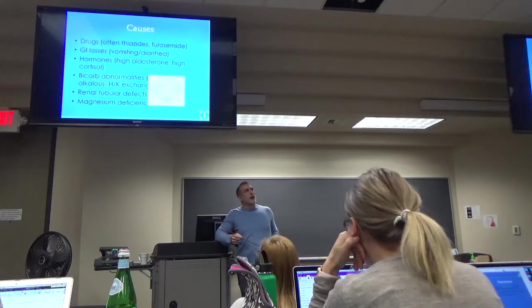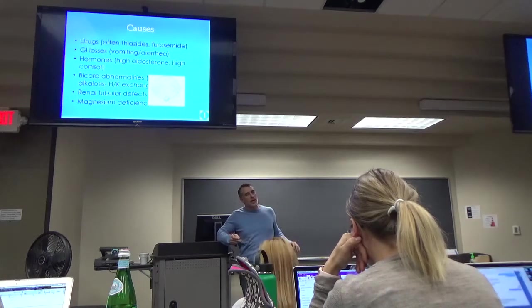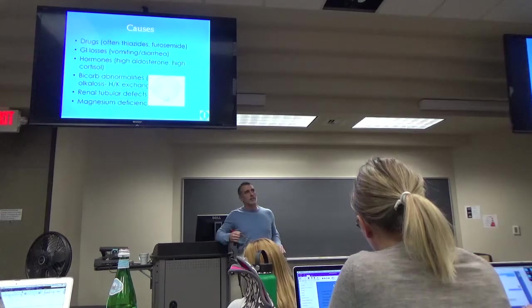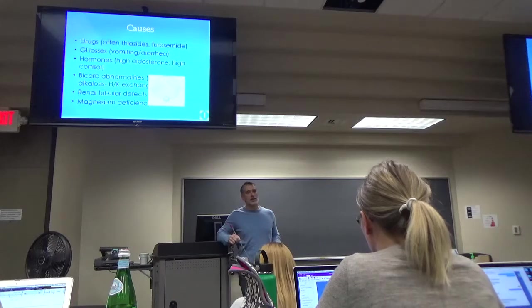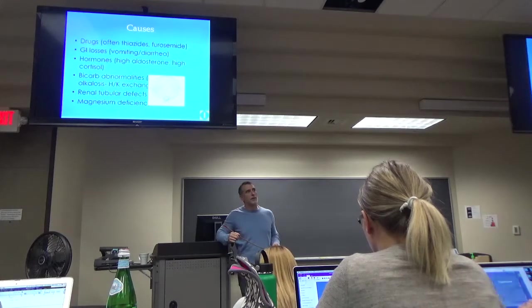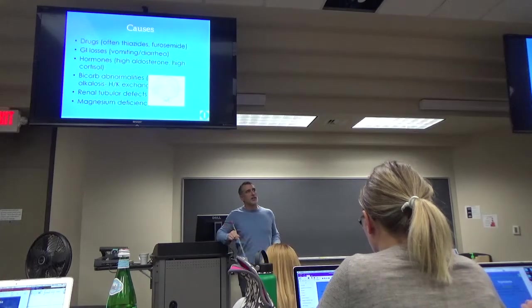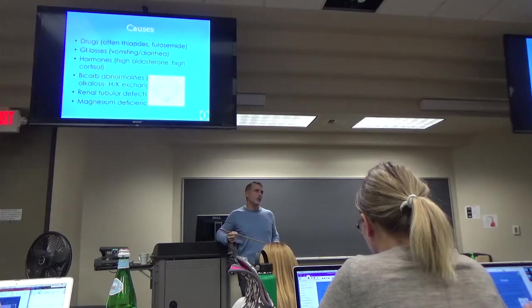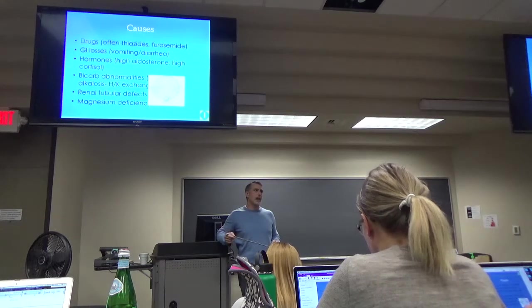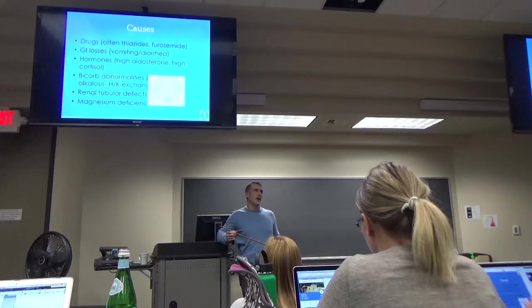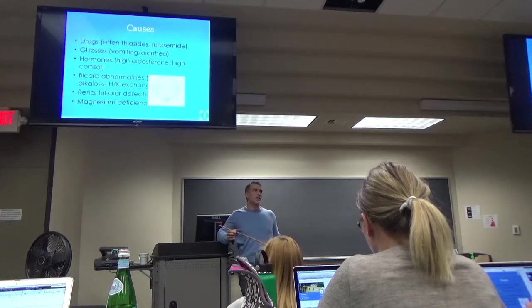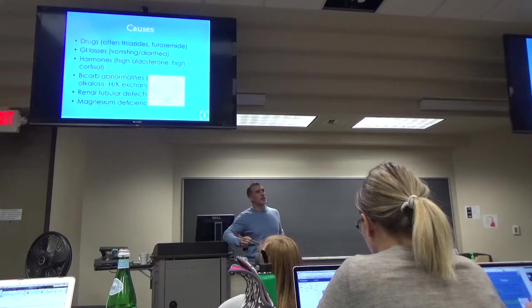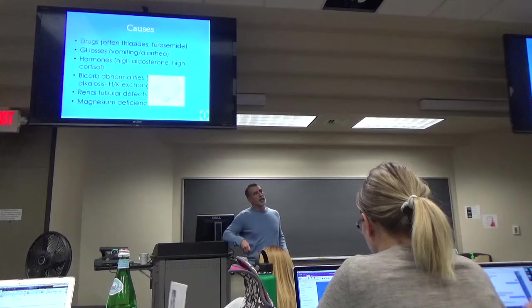So causes, usually it's going to be a medication, either a thiazide or some loop diuretic, furosemide or Lasix being the most common. Also, GI symptoms, somebody that's having severe vomiting and diarrhea can get hypokalemia. Also, if they're starting to have endocrine abnormalities, they can get wasting of it. They have acidosis abnormalities. Renal tubular defects can lead to wasting of potassium. And then magnesium deficiency.